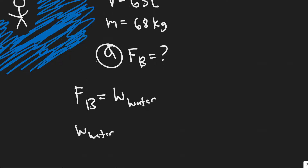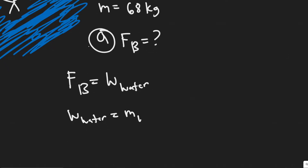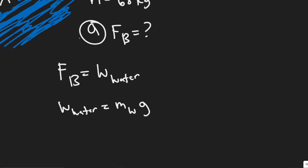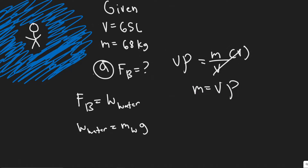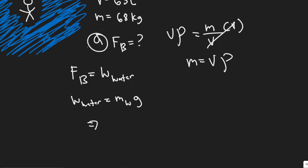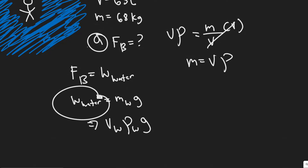The weight of the water is just the force due to gravity, so we have the mass of the water — I'll call it m_w — multiplied by g. But what is the mass of this water that's going to be displaced? We know the formula: density, denoted by rho, equals mass over volume. Therefore multiplying both sides by V you get m = V × ρ, so mass equals volume times density. So in this case: volume of water displaced times density of water times g gives you the weight of the water, which equals the buoyant force.